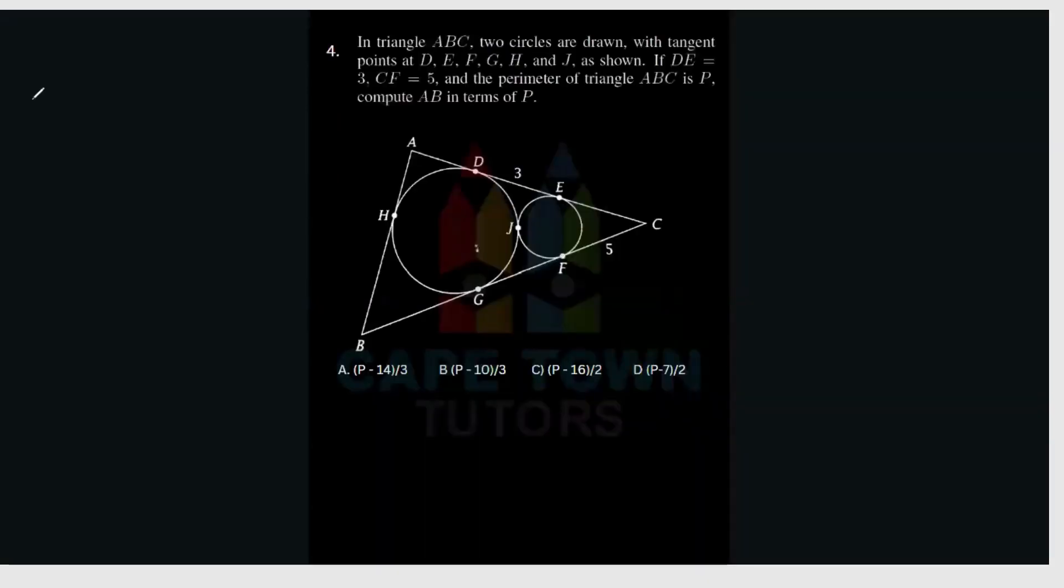Alright, cool. Question four. Question four says: in triangle ABC, circles are drawn with tangent points D, E, F, G, H, and J as shown.